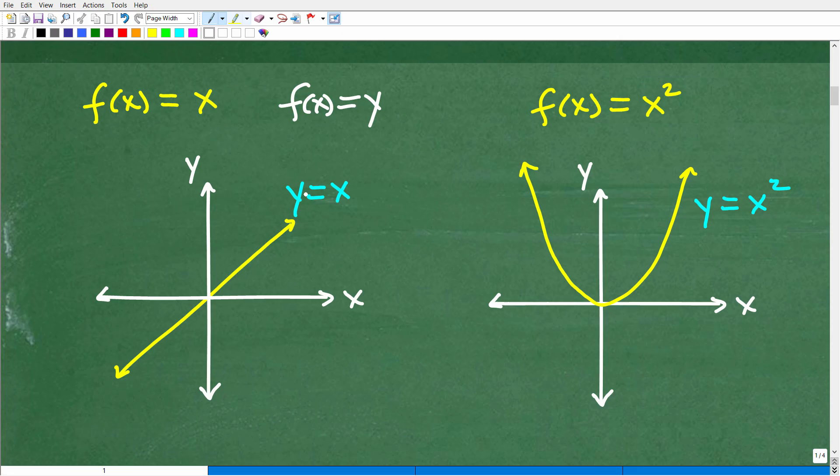Okay. So, this right here, the function f of x is equal to x, this would be its graph. And then the function here, f of x is equal to x squared, would be the same as the equation y equals x squared, which is just a basic parabola, and its vertex is at the origin, 0, 0. So, hopefully, you understand that.